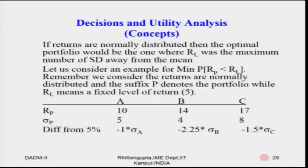If the distribution changes, you have to use simulation studies, which we will cover in DADM 3 under reliability-based robust optimization when distributions are not normal. If returns are normally distributed, the optimal portfolio will be the one where Rl is the maximum number of standard deviations away from the mean — whether on the right or left depending on whether you consider positive or negative returns.